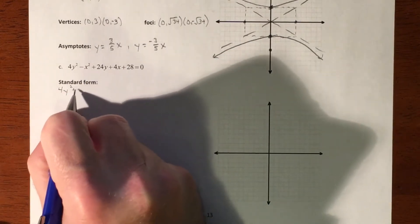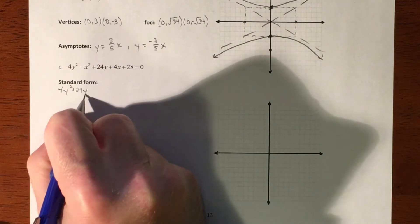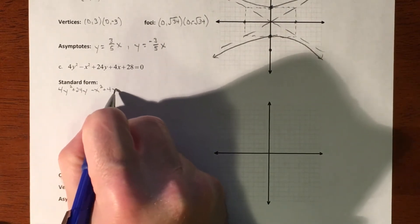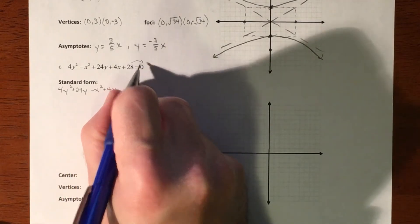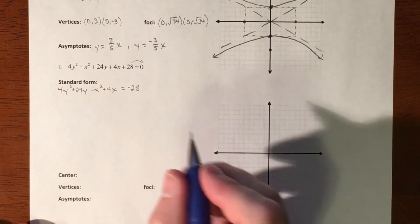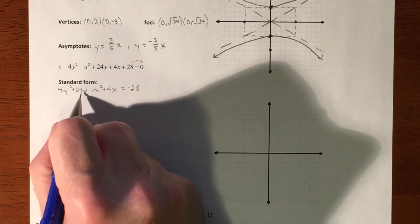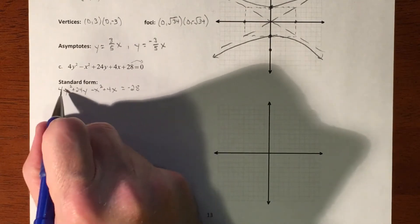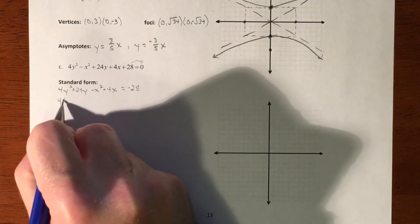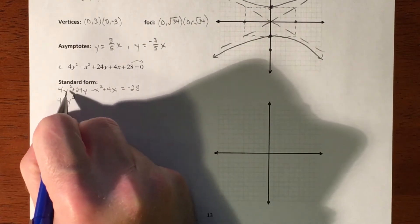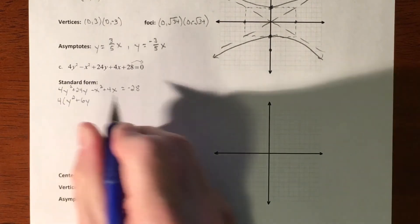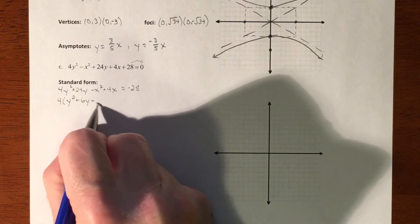I'm going to take my y's and group them together: 4y² + 24y, then minus x² + 4x, and move the 28 over to the other side, giving negative 28 on the right. Next, I need to complete the square, but I have to factor off any values attached to the squared terms. I'll factor a 4 off the y terms, giving y² + 6y, and leave space to complete the square.